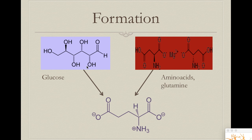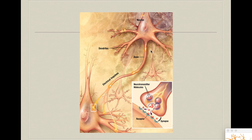How does our brain produce glutamate? Basically, it takes a glucose molecule obtained from food and takes the carbon skeleton that glucose has — these five carbons — and attaches an amino group from an amino acid called glutamine. We take this amino group and attach it to the carbon skeleton of glucose, allowing us to produce the final molecule of glutamate.